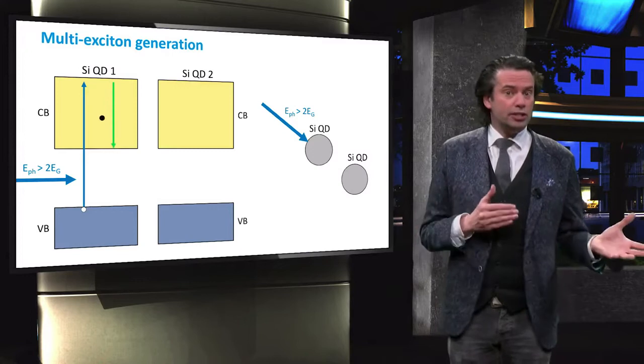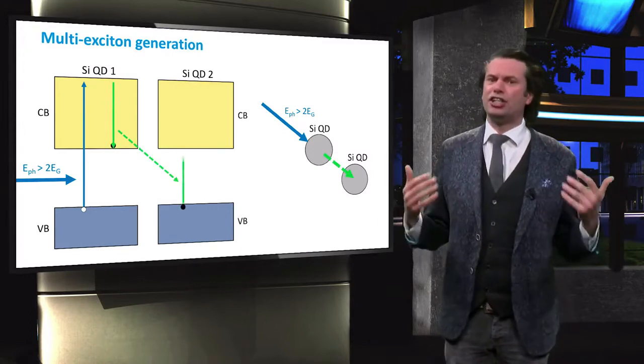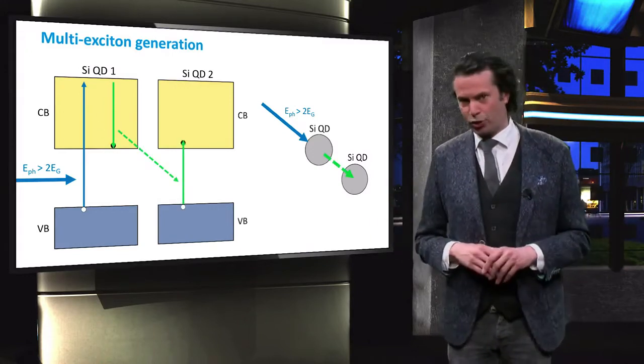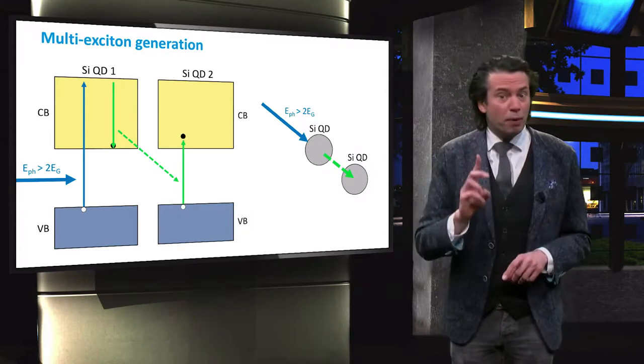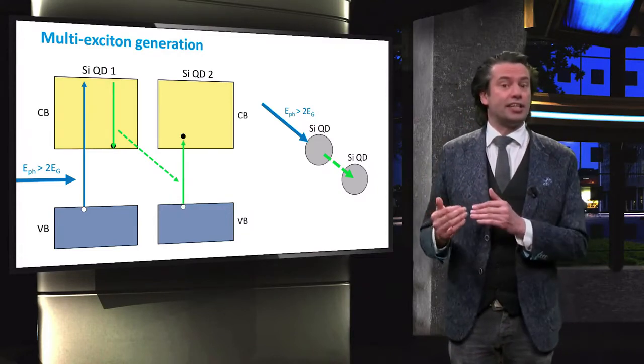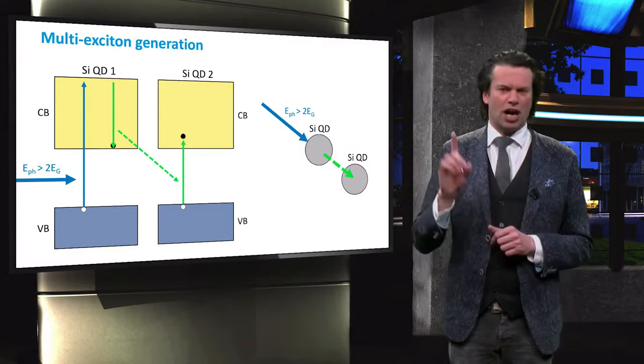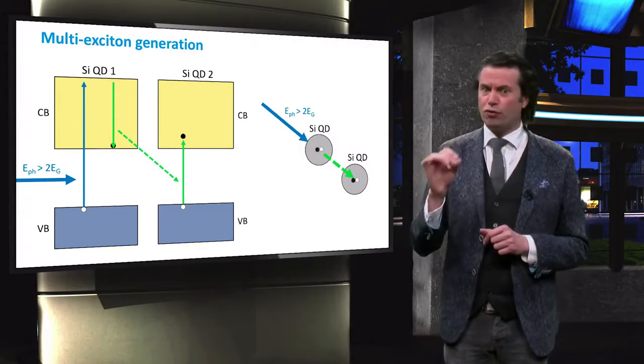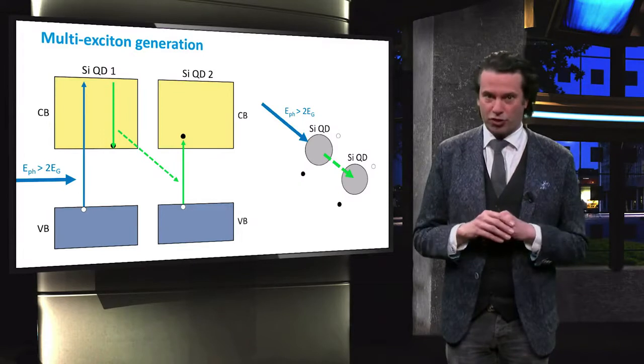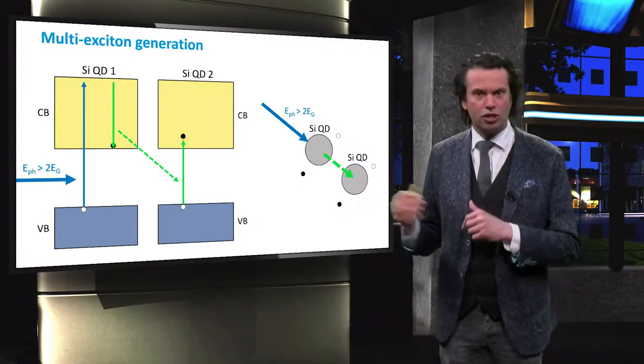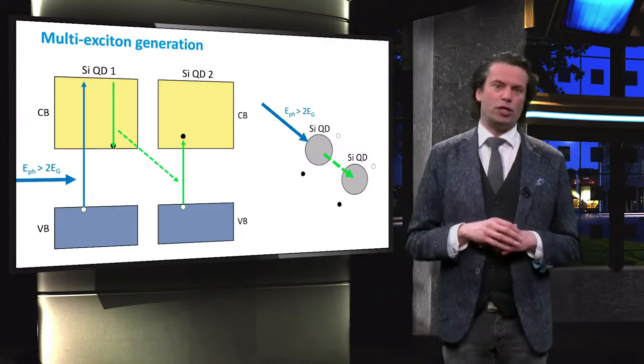Instead of being lost as heat, the excess energy is again transferred to a neighboring dot. In the second particle, another electron is excited into the conduction band. Now however, the charge carriers of the two excitons are separated and transported to the PV active layers before they can recombine.